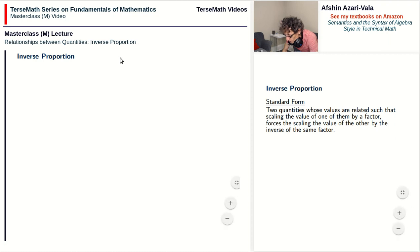These kinds of relationships are called inverse proportion problems and the standard form of the equation for inverse proportion is q2 equals a constant divided by q1. As usual, a constant has a fixed value for a given problem.